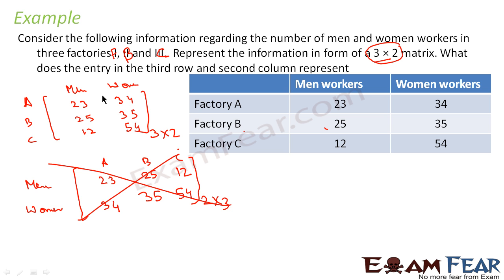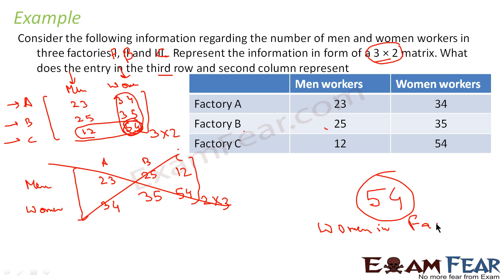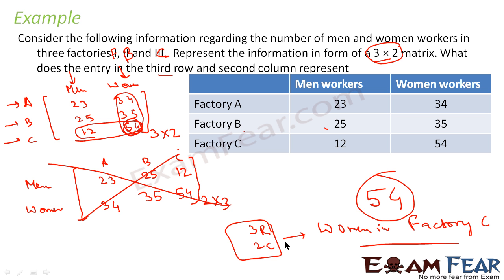The question also asks: what does the entry in the 3rd row and 2nd column represent? The 1st row is factory A, 2nd row is factory B, and 3rd row is factory C. The 1st column is men and the 2nd column is women. The intersection — the 3rd row, 2nd column — is 54, which is the number of women in factory C.